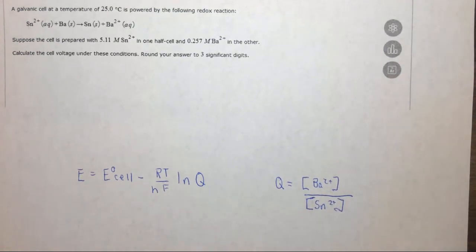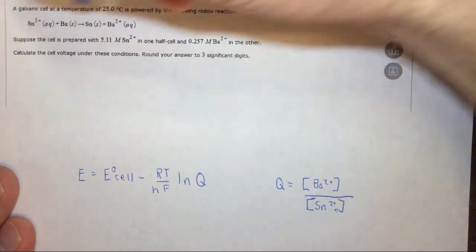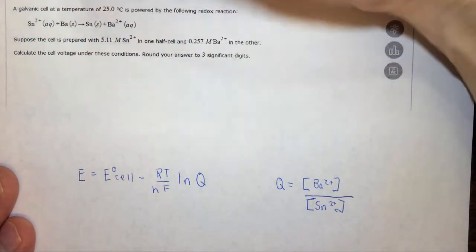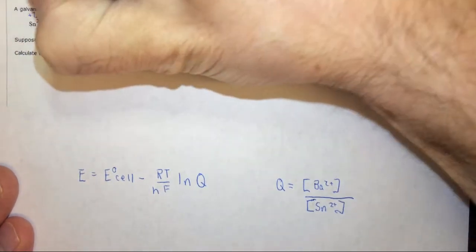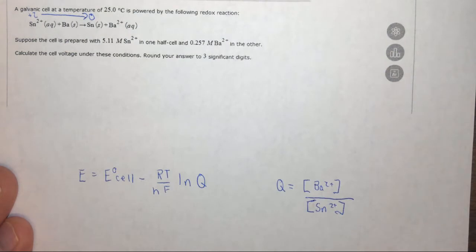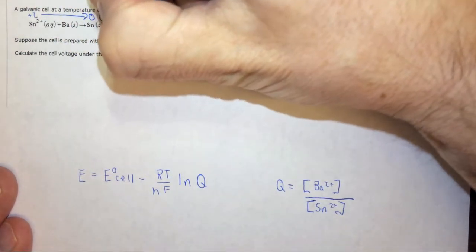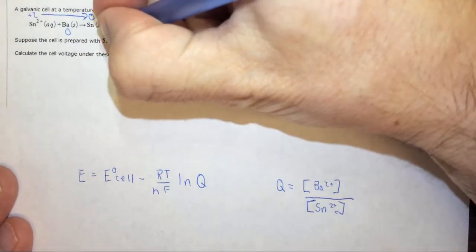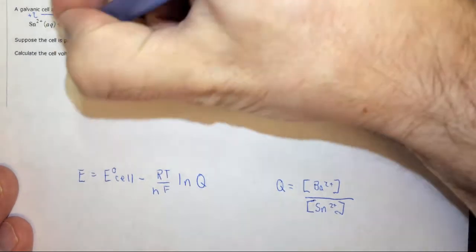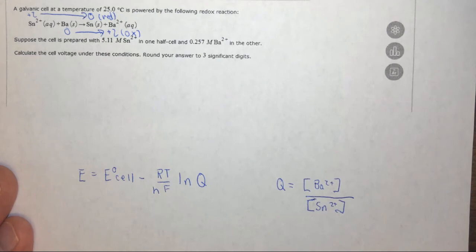But like in the other ones we need to find the standard reduction potential the usual way. So first we need to find the charges on things, and this is one that's pretty straightforward because they're either 0 or given. In this case tin is plus 2 and it's going to 0 because it's elemental, so it's going from plus 2 to 0. We have reduction, so this is the cathode. We have barium going from 0 to plus 2, so it's losing electrons, so oxidation is occurring, and this is the anode.